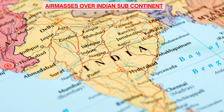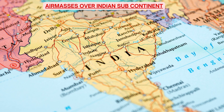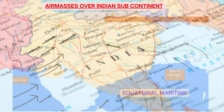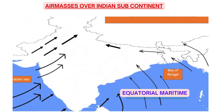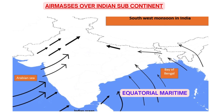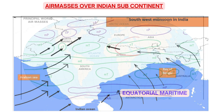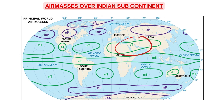It is important to know the air masses affecting the Indian subcontinent. There are three main types. The first is Equatorial Maritime, which originates over the Indian Ocean and covers up to 25 degrees north latitude of India. The southwest monsoon that hits India carries this Equatorial Maritime air mass.